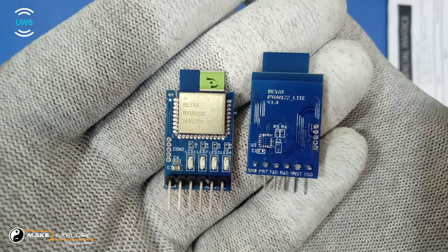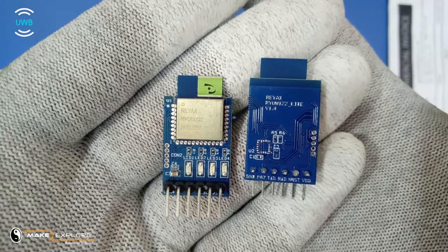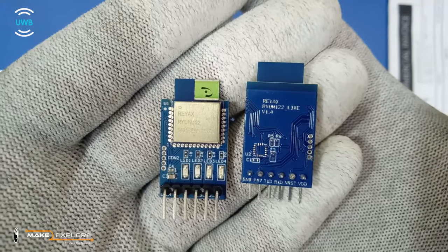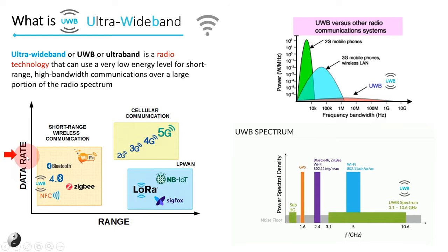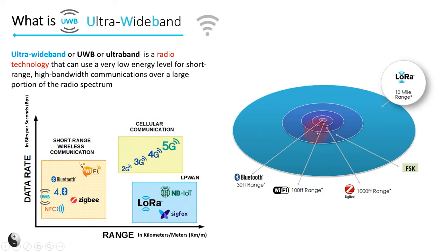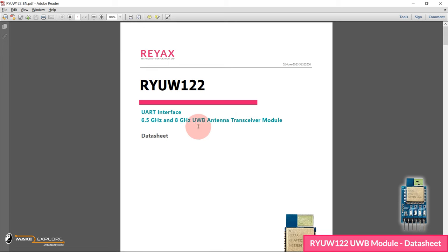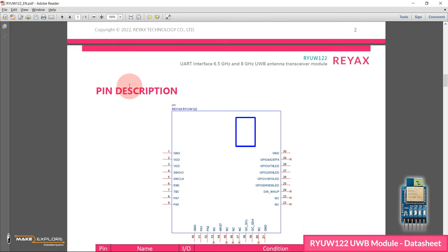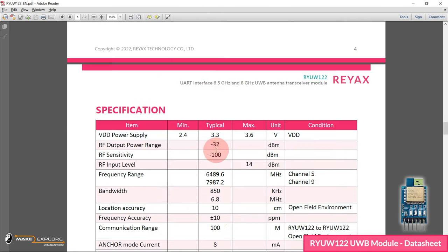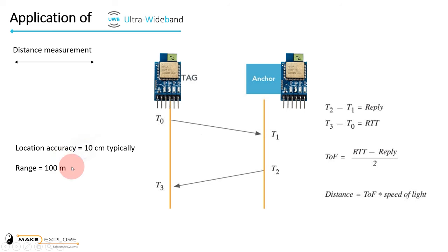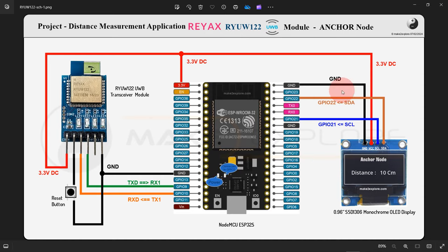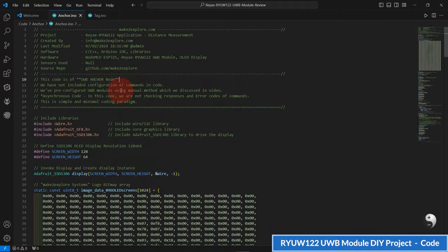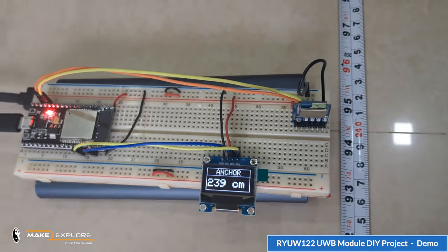Hi, in this video we are going to explore and test these UWB modules, the ultra-wideband transceiver modules. First, we will see a brief introduction to ultra-wideband radio technology. Then, we will see about the datasheet, features, and specifications of this UWB module. And finally, we will design one distance measurement application project using this awesome technology. So, without any further delays, let's get started.